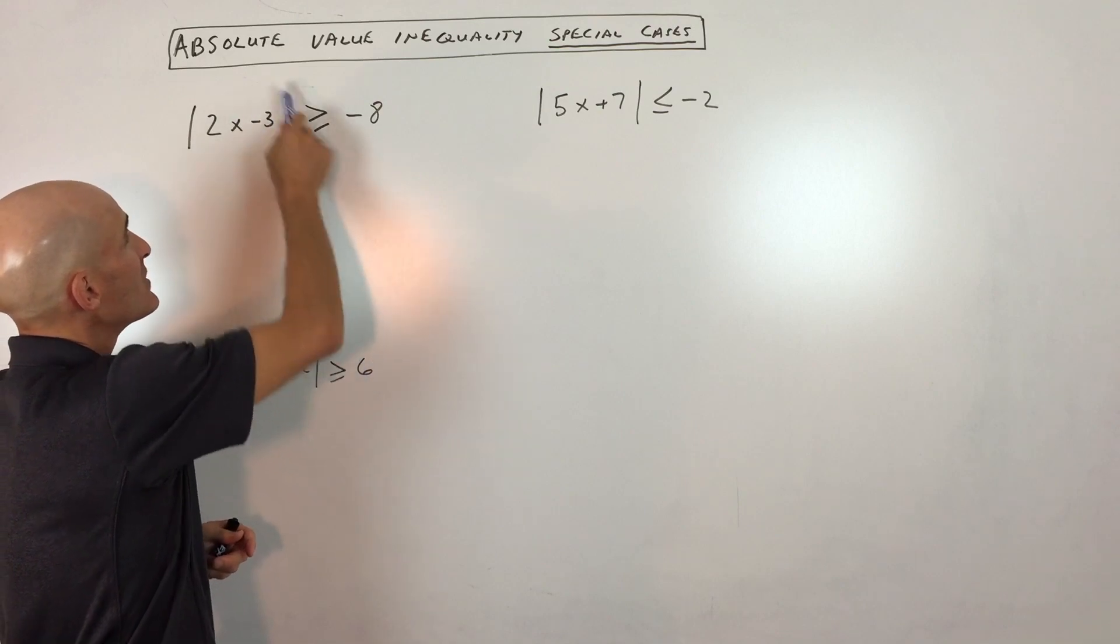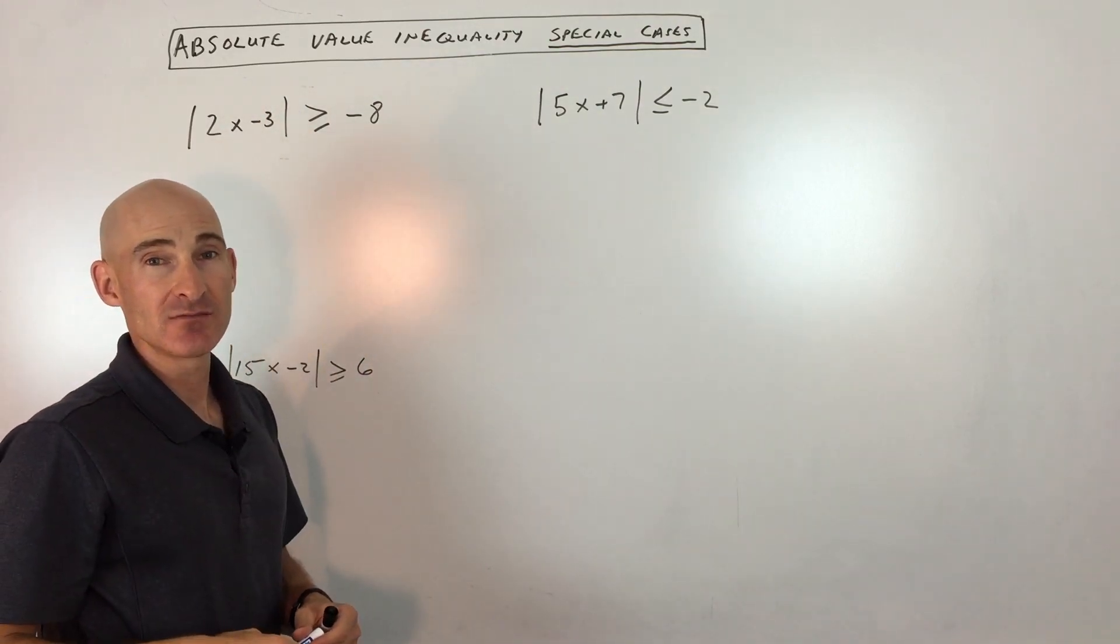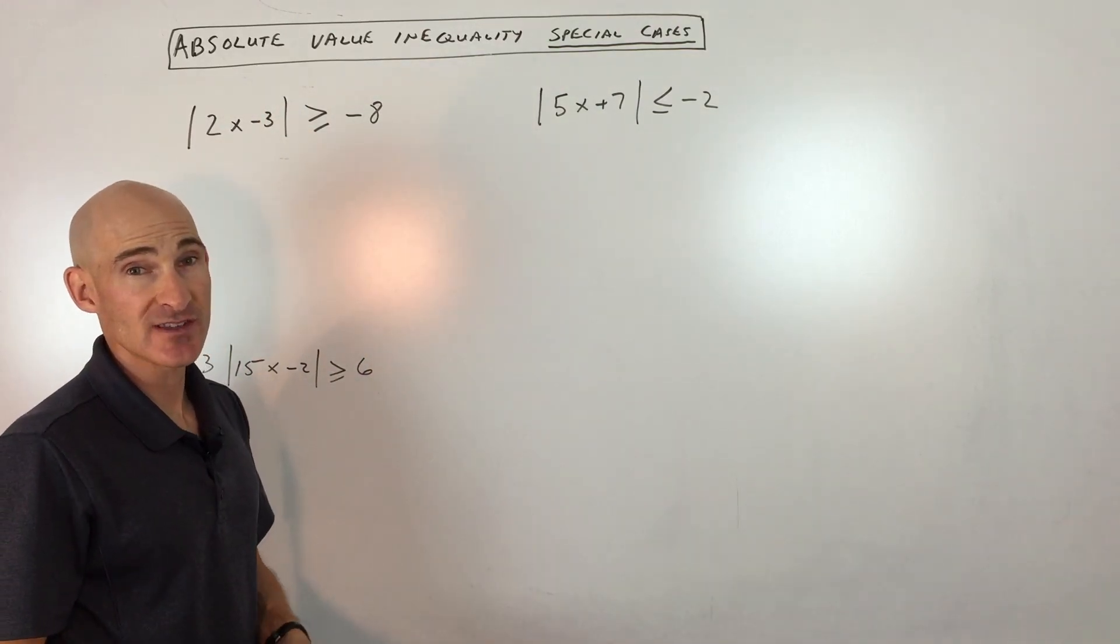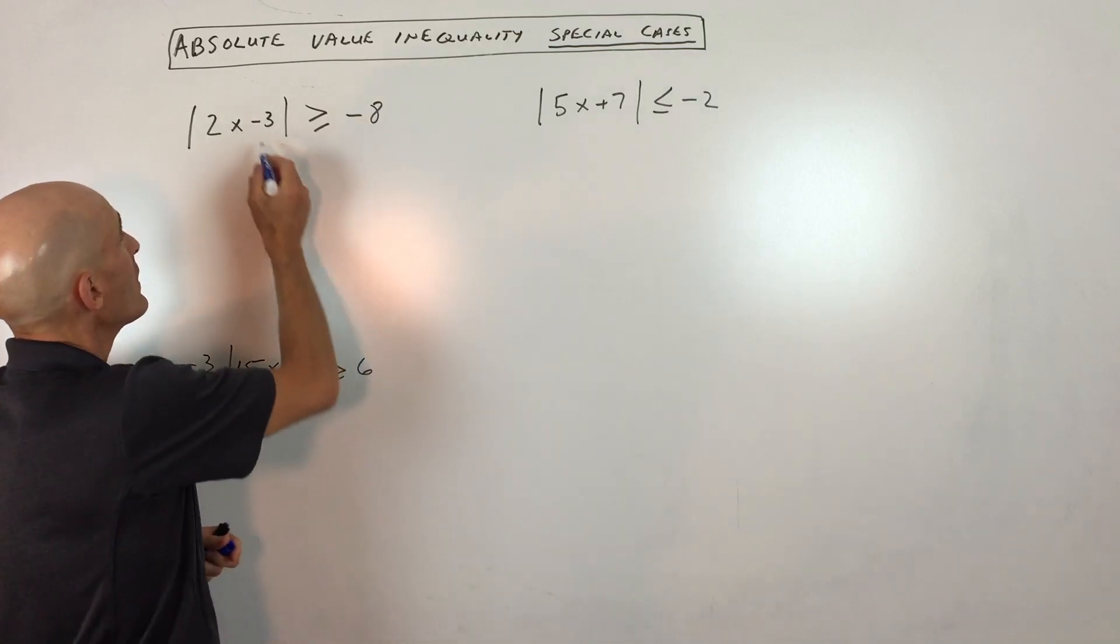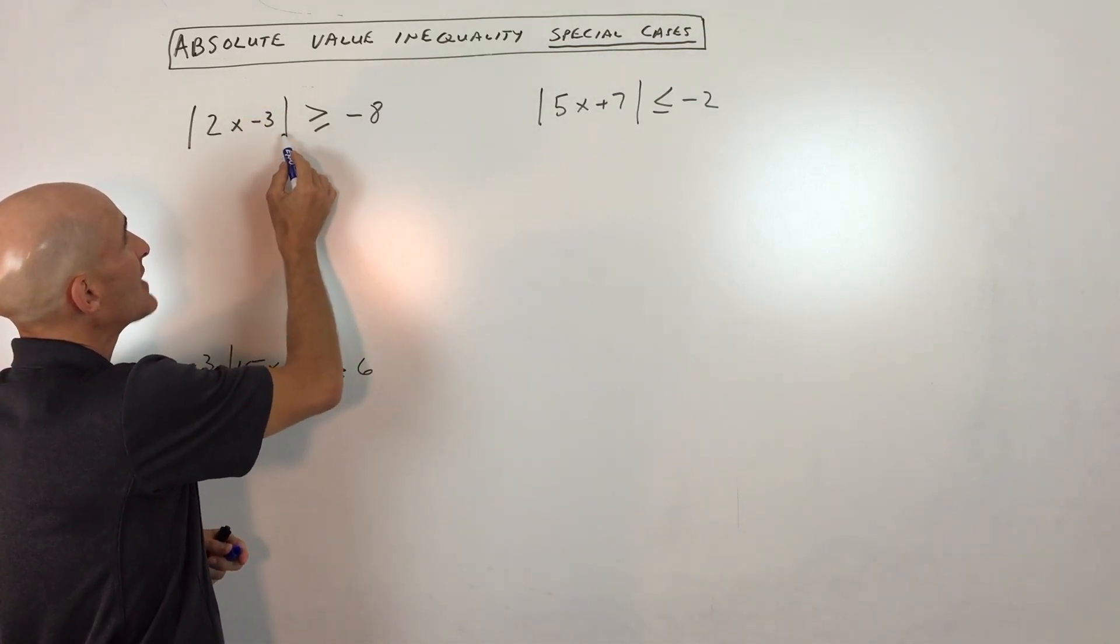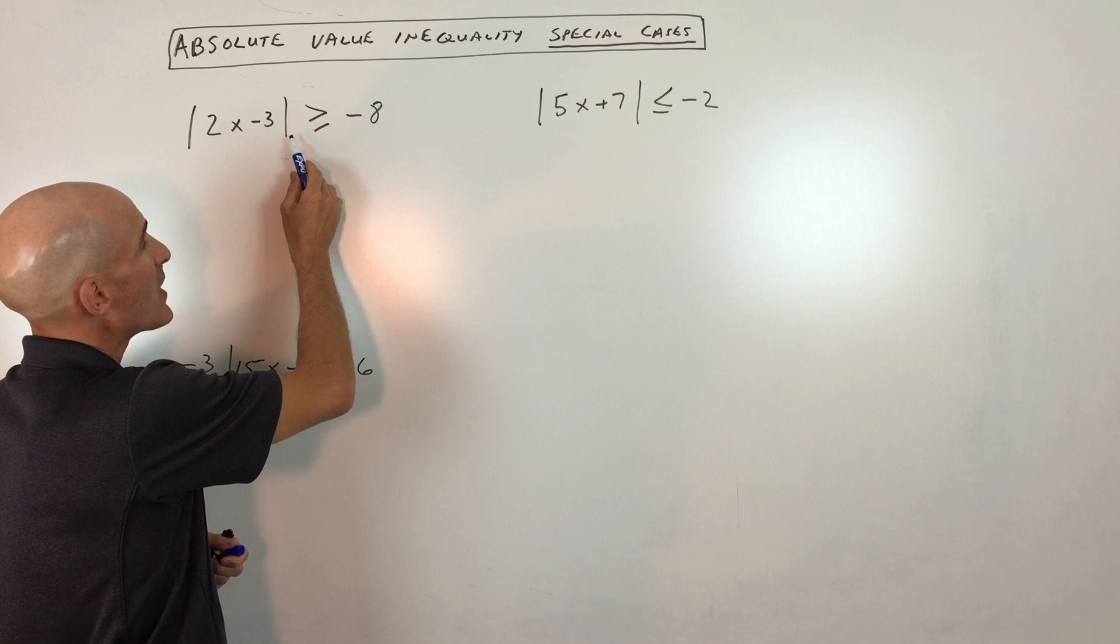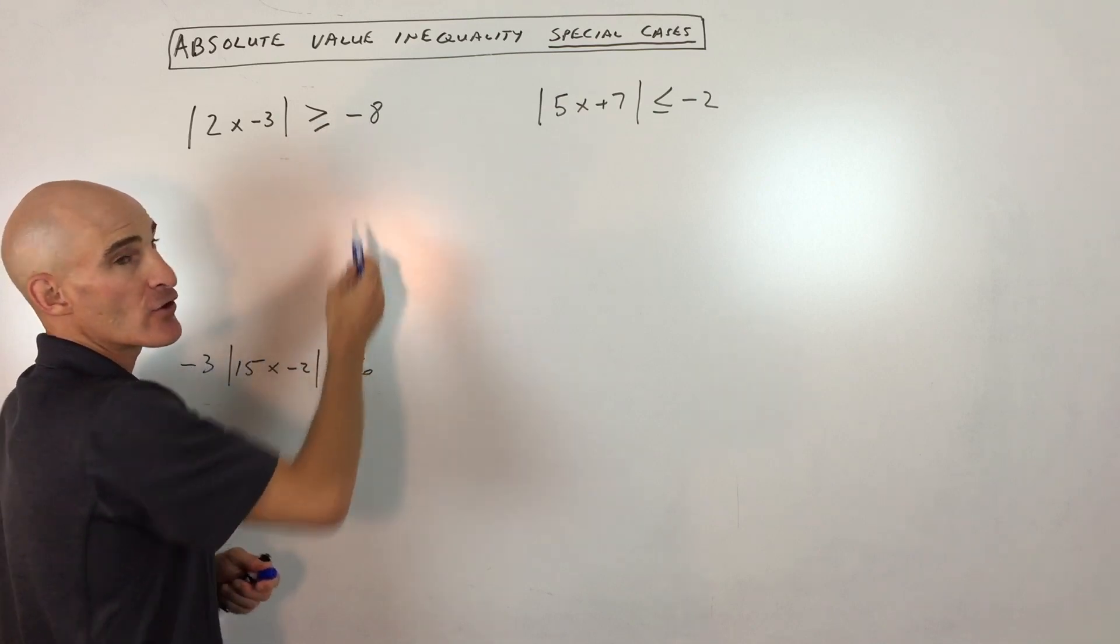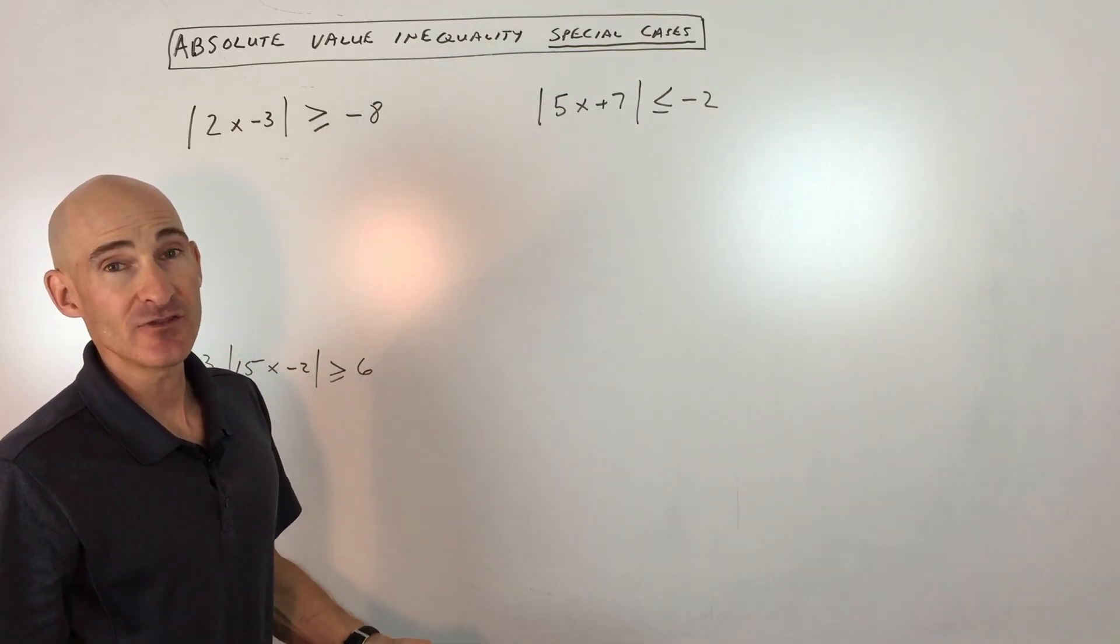The smallest this whole quantity can be after you take the absolute value is going to be zero. That's the smallest that it can be. So whatever happens here, once you take the absolute value, it's going to be zero or greater, which means it'll automatically be greater than or equal to any negative number.